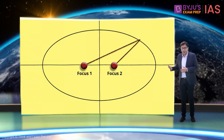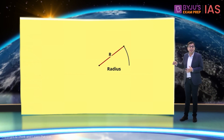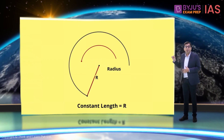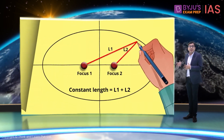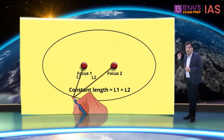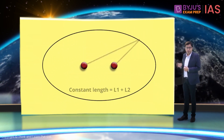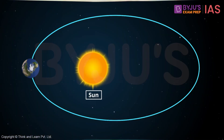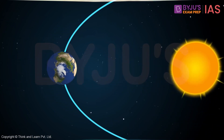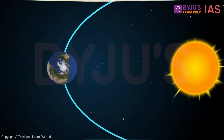There is a bit of math we need to understand about these ellipses. We know the radius of a circle is a line representing the constant distance of points on the circle from the center. But in an ellipse, it is the sum of these two lengths — L1 and L2 — that remains constant. The Earth's orbit is an ellipse with the Sun at one of its foci.